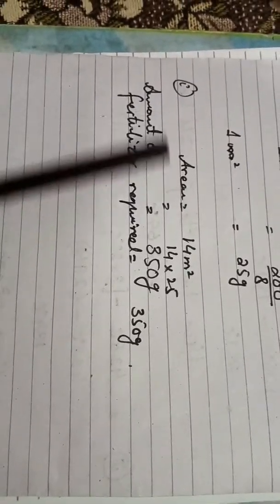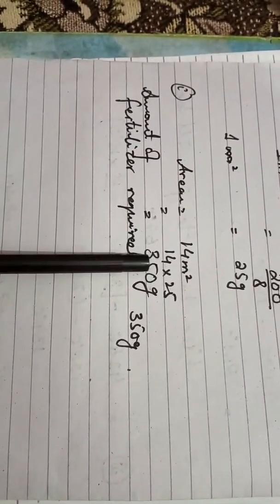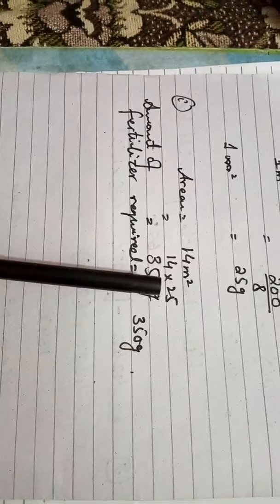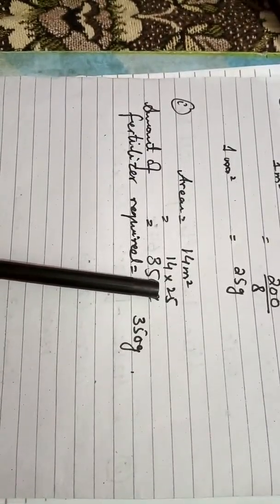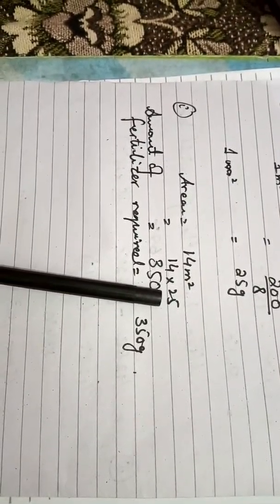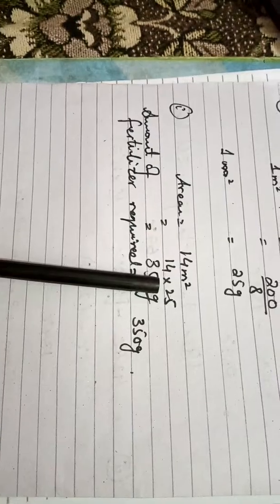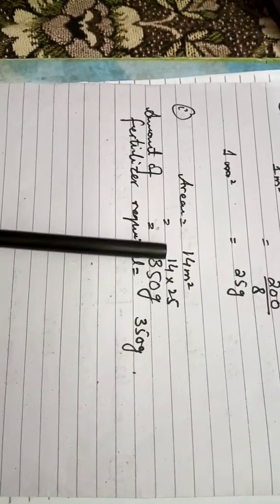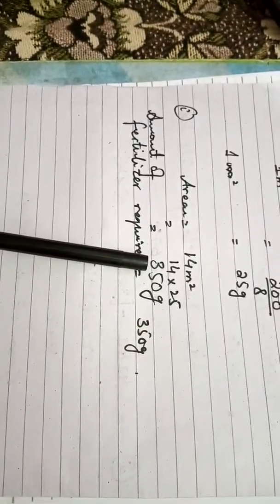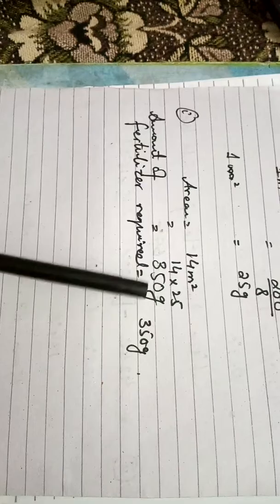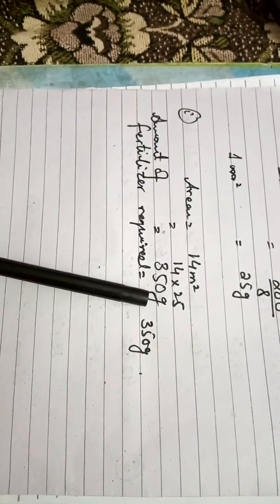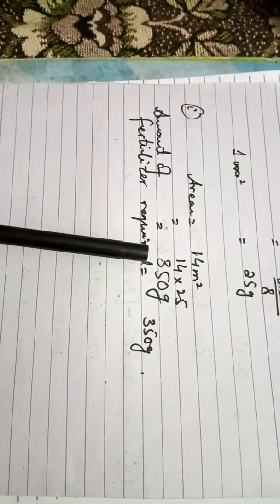So, when we have 1 meter square of area, we know how much fertilizer is required per 1 meter square. Then for 14 meter square, we can calculate the total fertilizer needed. Now we move to the second part of the question.